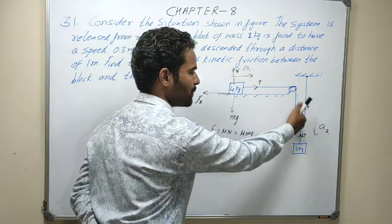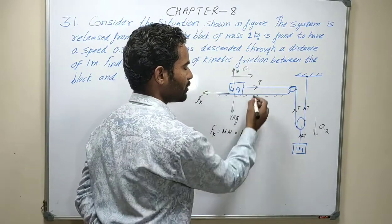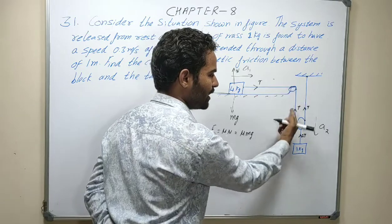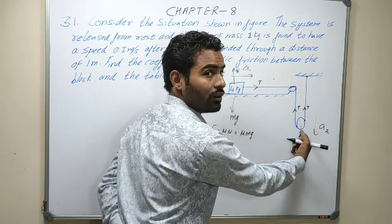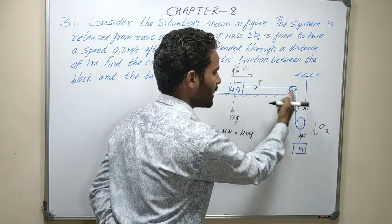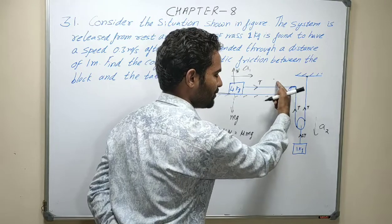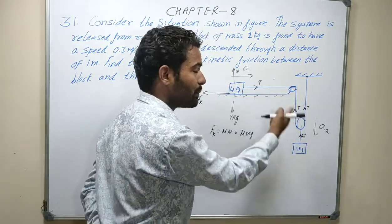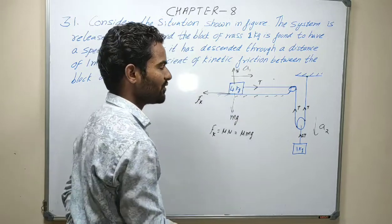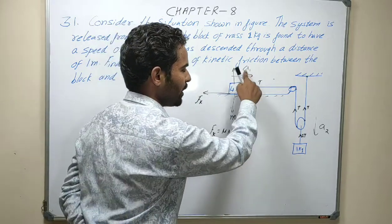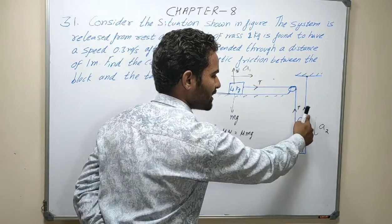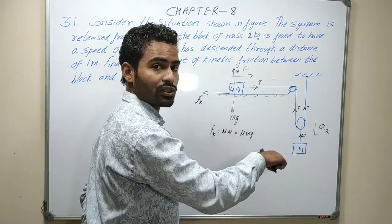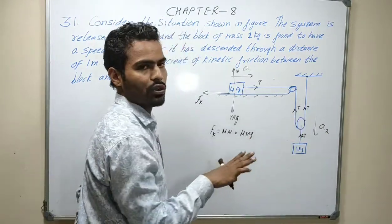We need to see the relation. See the displacement: this will be X2. So X1 plus X2 plus X2 is equal to total length. Then differentiate two times: A1 plus A2 plus A2 equals 0, so A1 plus 2A2 equals 0, therefore A1 is equal to 2A2.